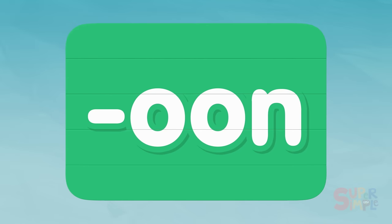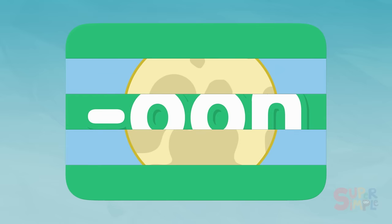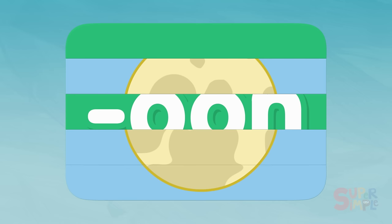Let's try another one. Hmm, what could this be? It looks like it's a big circle. It is a big circle — hmm, could this be...?